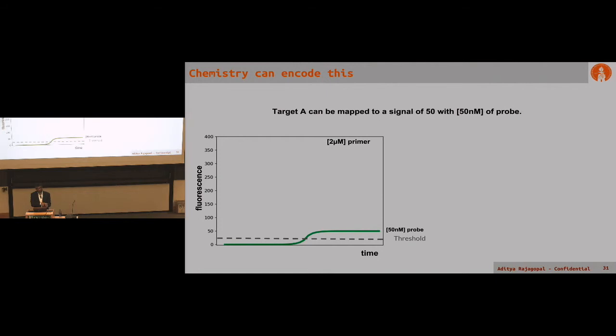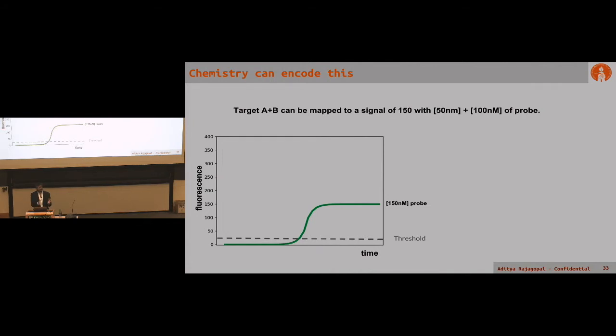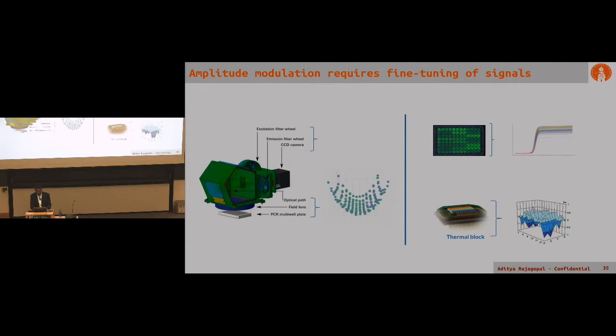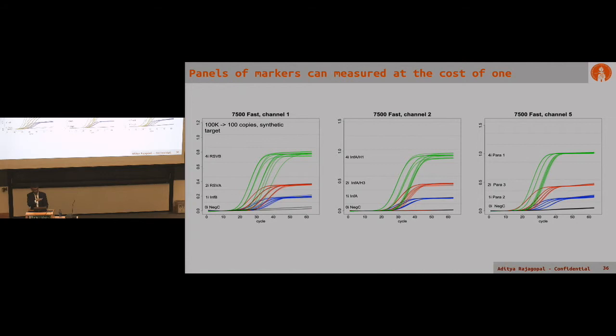What this lets us do is take a set of PCR reagents for measuring cancer markers like BRCA1, and engineer a cocktail to have a very deterministic signature. You can map any unique combination of targets to a unique fluorescent signature. But amplitude modulation does require a few other things. There's a whole bunch of signal processing you have to do to accommodate for things like thermal uniformity across the instrument.